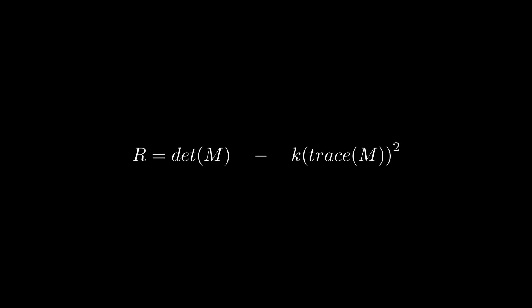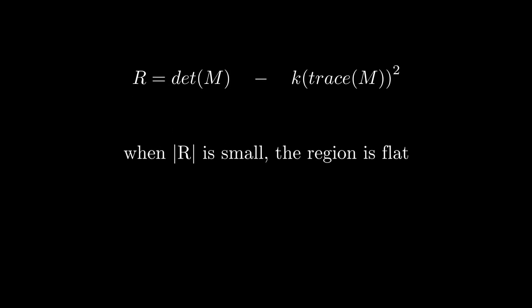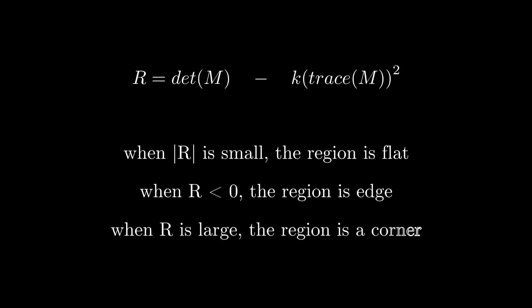The value of R is less than 0 for edges, it is a large value for corners. Let's implement the Harris Corner detector on our image and see the result. These are the features identified by the Harris Corner method.